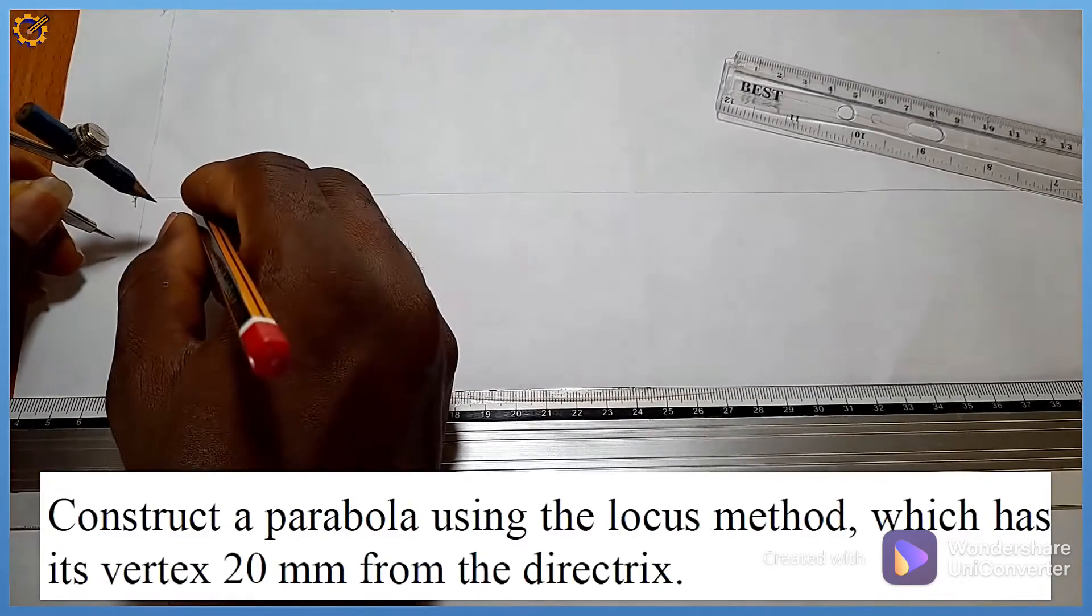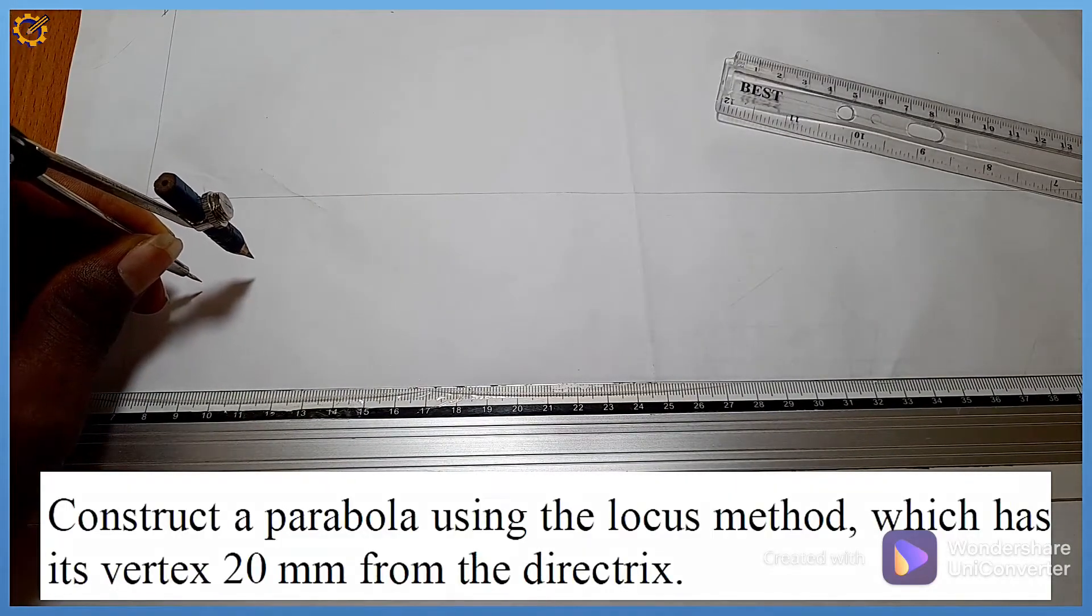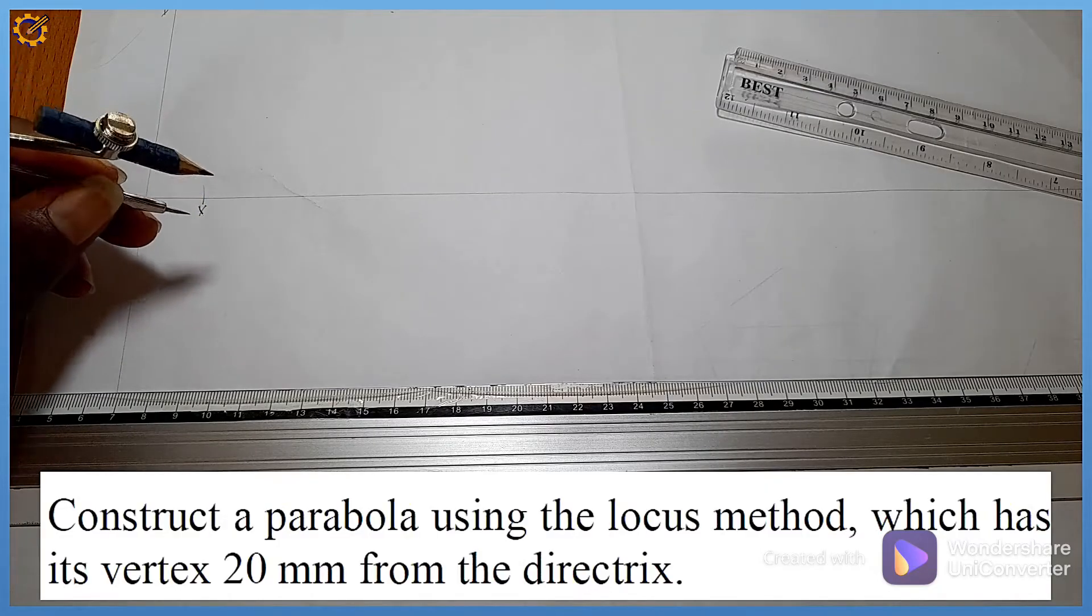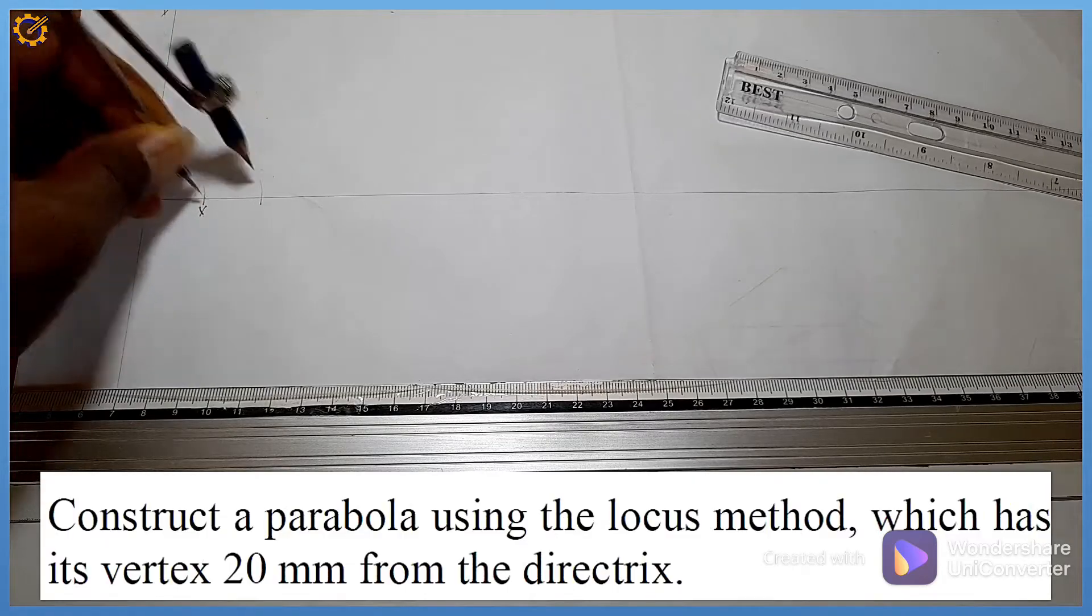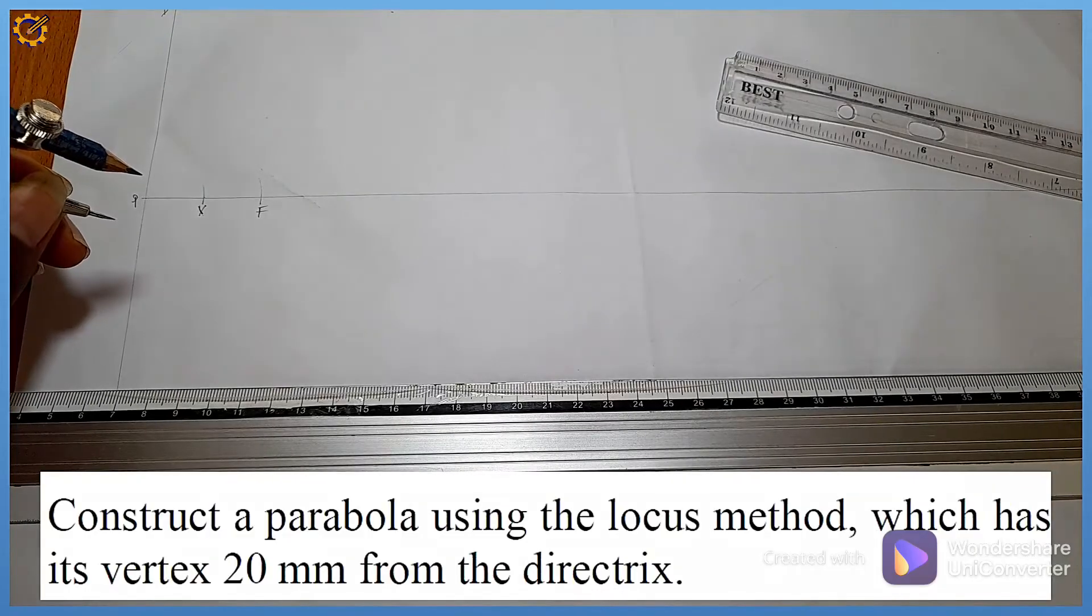So that is my vertex V. Having my vertex, I need to get my foci point. PV equals VF, so with the same measurement from point V I strike. I have my point F, which is my foci point.